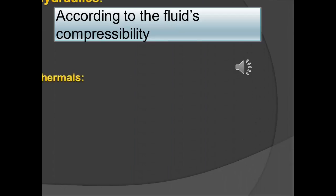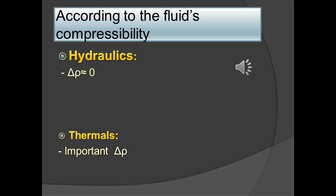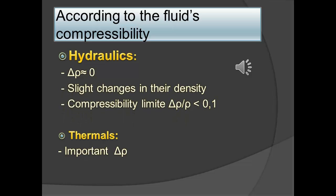According to the fluid's compressibility, we have the hydraulic and the thermal turbomachines. In other words, if the fluid doesn't change its density, the turbomachine is called hydraulic. But if the fluid changes its density, we call it thermal. Although we say that the fluid doesn't change its density, the reality is that the fluid changes its density, but it is a very small change.